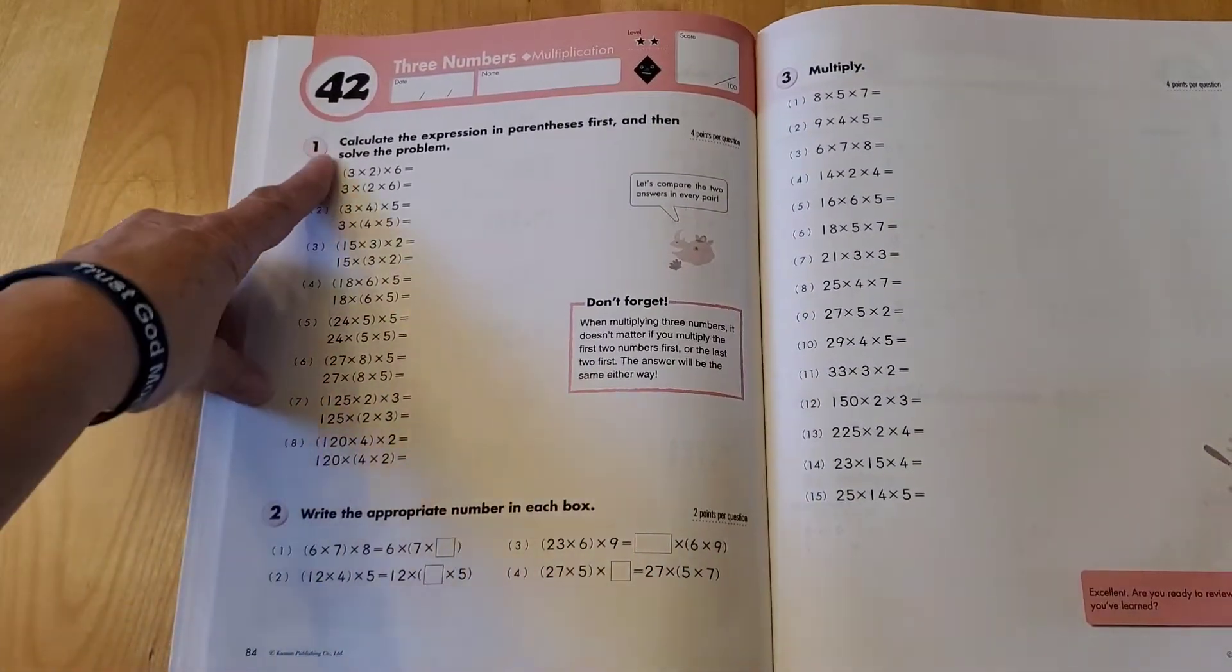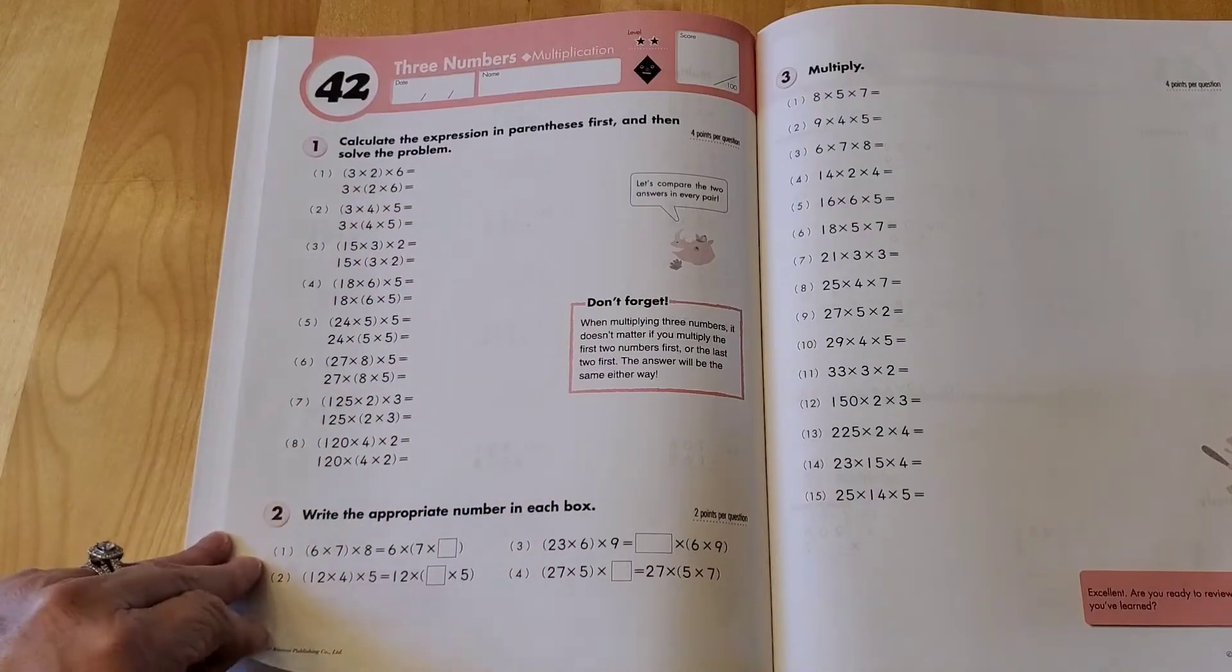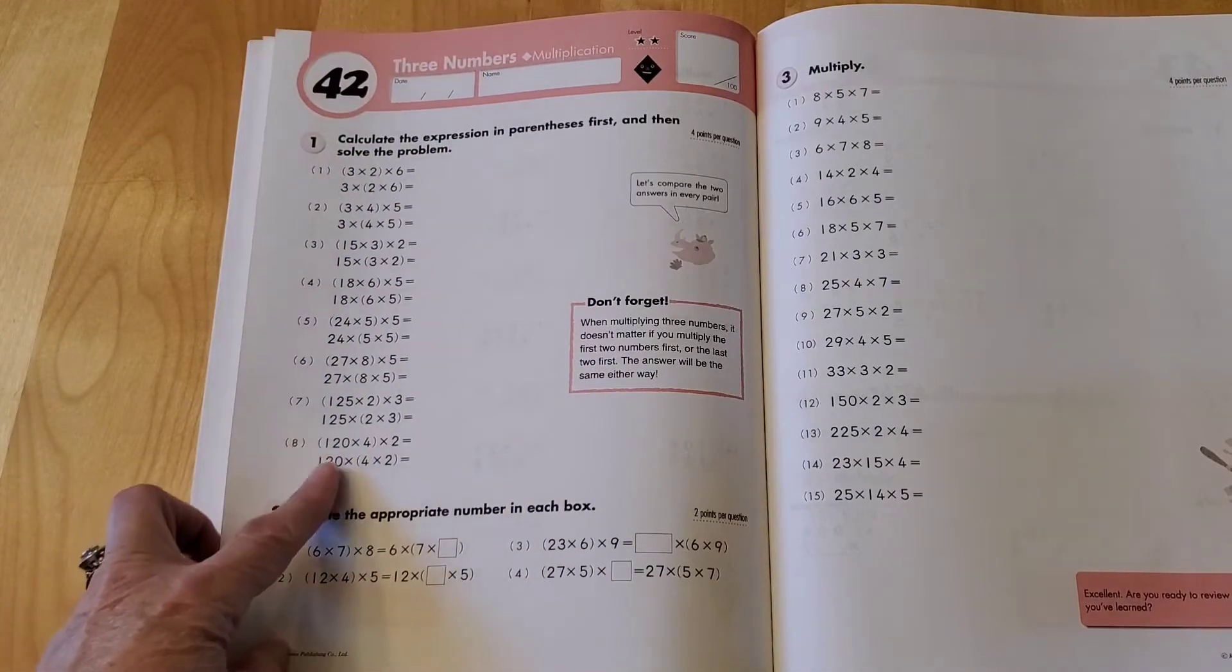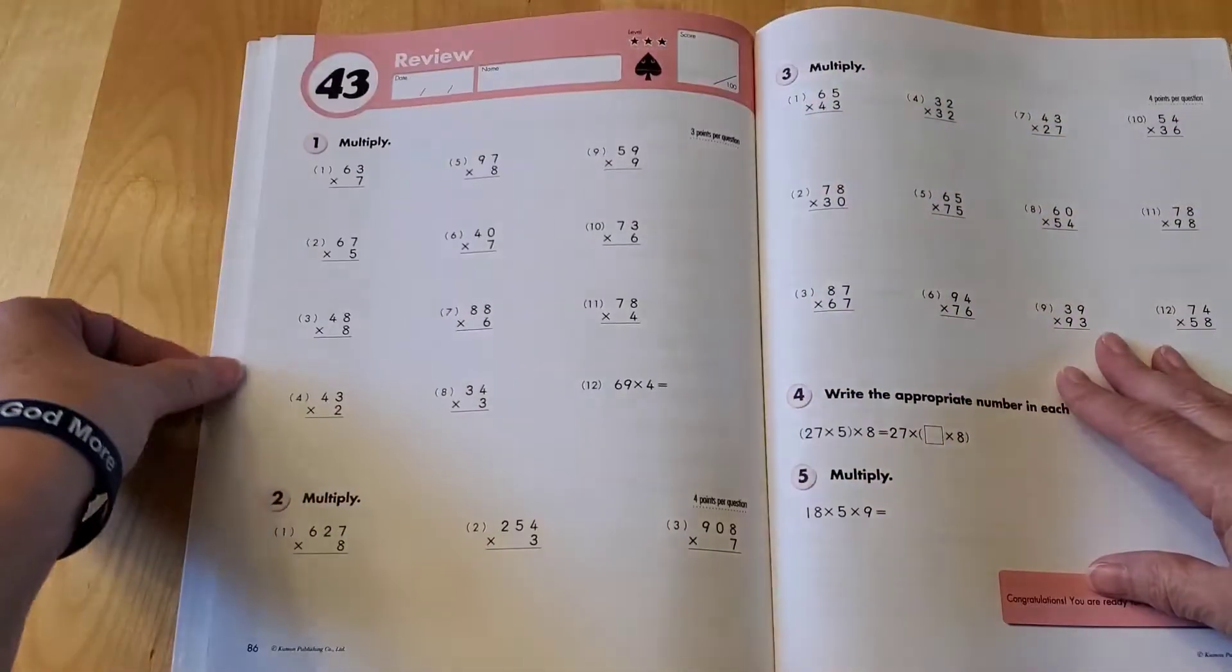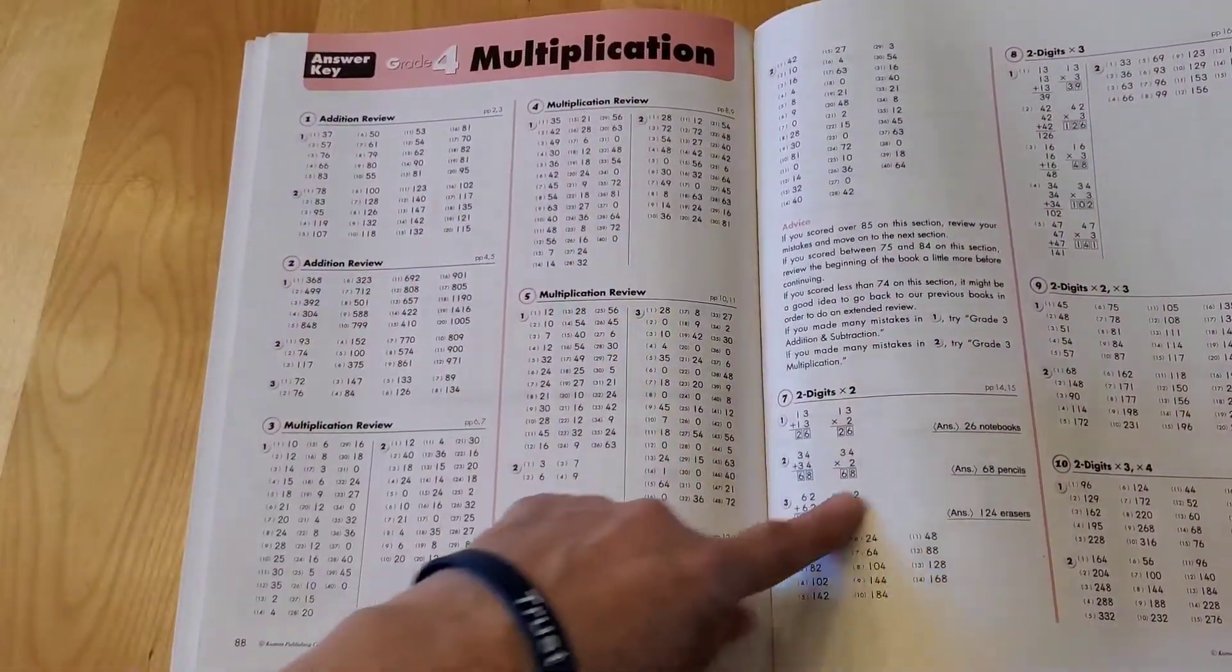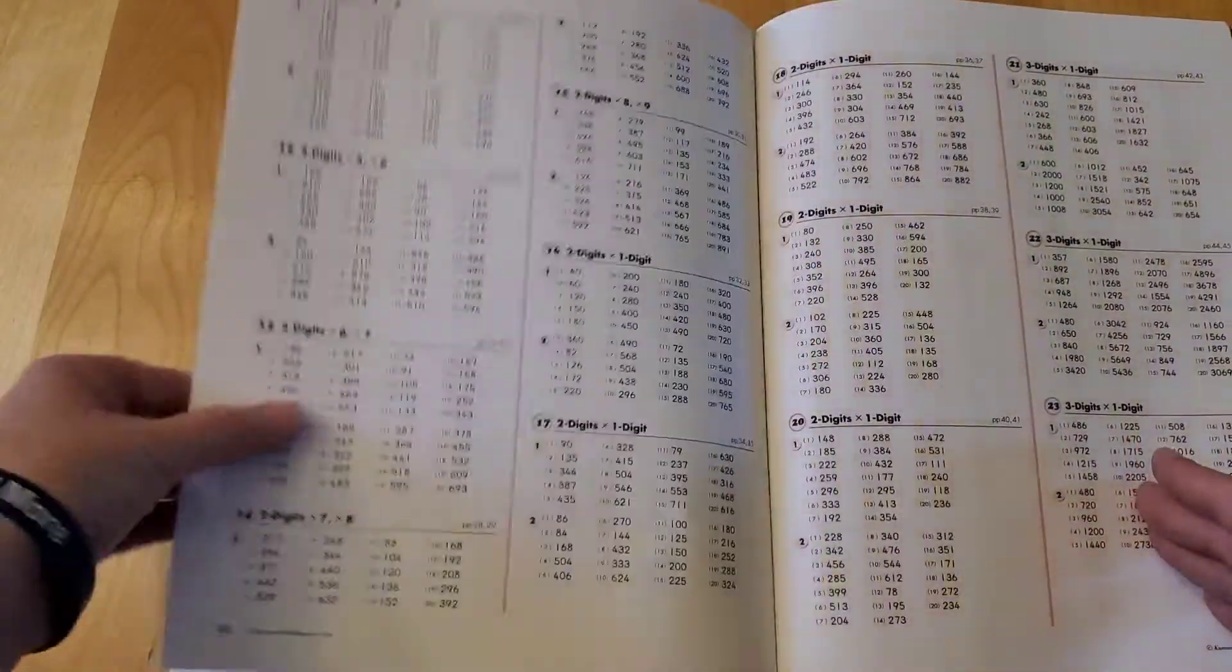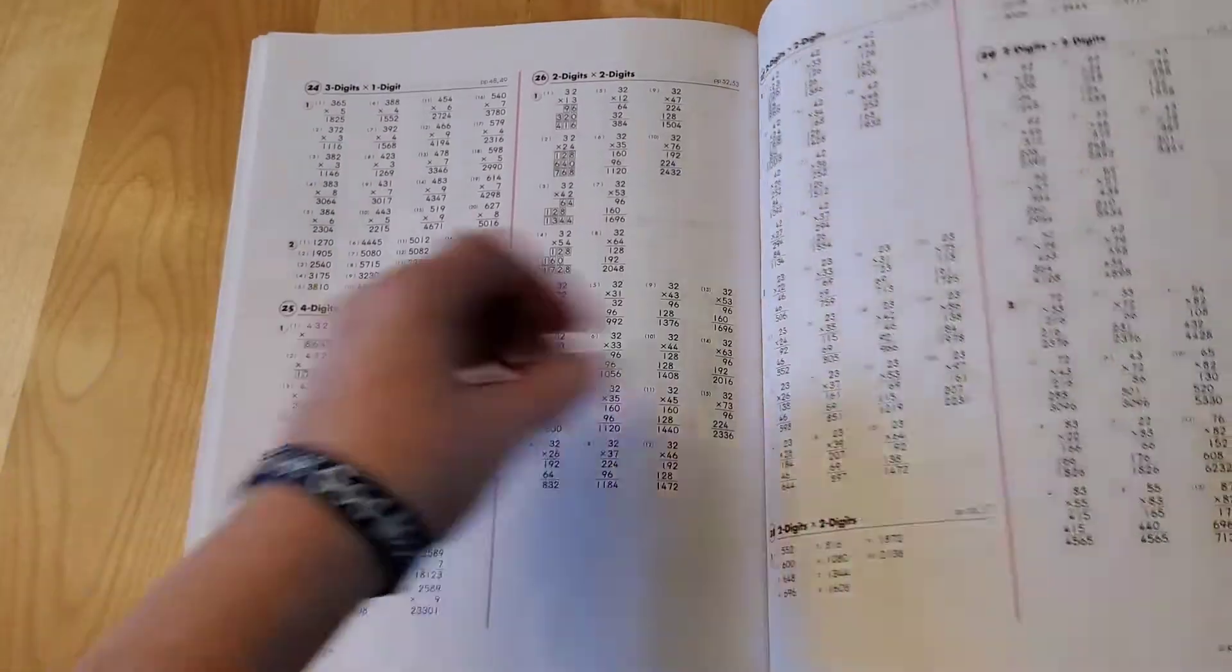And then three numbers. So that gets into calculate the expression in the parentheses first and then solve the problem. It gets into some more complicated stuff, which is really cool. And then it has review. And here is the answer key in the back that gives you all of the answers to all of the problems in the book.